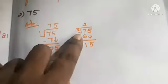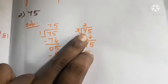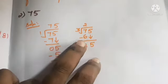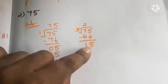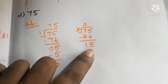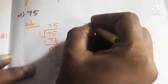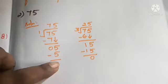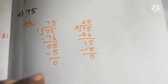Dividing 75 by 3: after getting remainder 1 in the tens place, bring down 5 to make 15. How many 3s in 15? Five 3s are 15; 15 minus 15 is 0. Remainder is 0, so 3 and 25 are factors of 75.